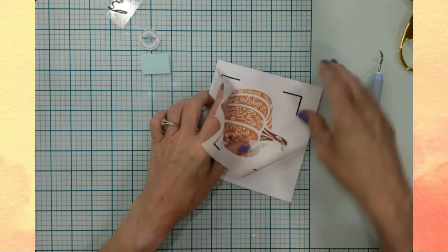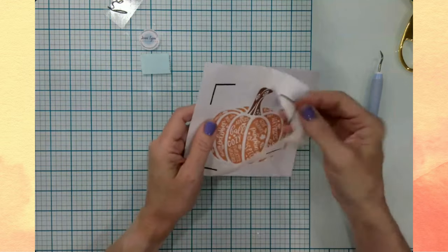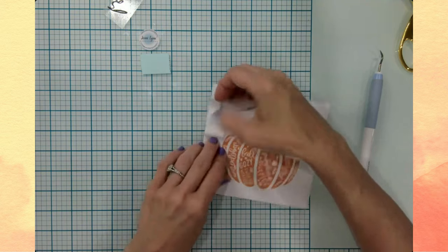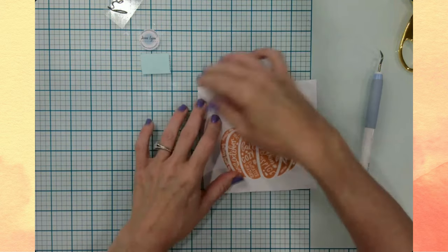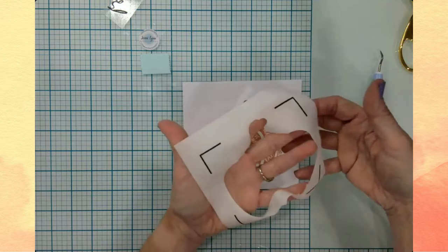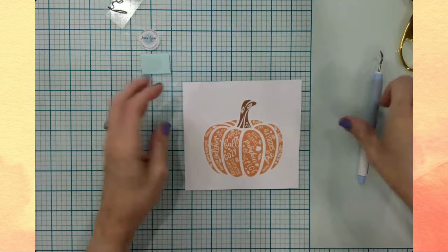And when you go, when you print it out, these black registration marks, just like on any of your other print and cut projects, make sure that you leave those on and don't cut those off. But this, those registration marks allow the Cricut to know where to cut.